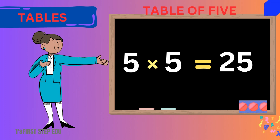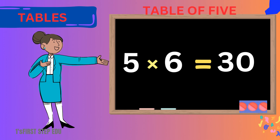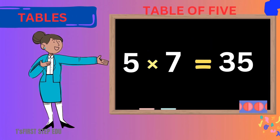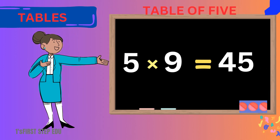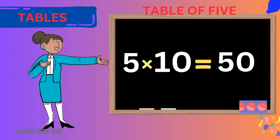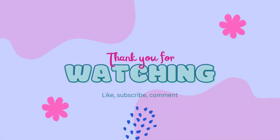5 ones are 5. 5 ones are 5. 5 twos are 10. 5 twos are 10. 5 threes are 15. 5 threes are 15. 5 fours are 20. 5 fours are 20. 5 fives are 25. 5 fives are 25. 5 sixes are 30. 5 sixes are 30.